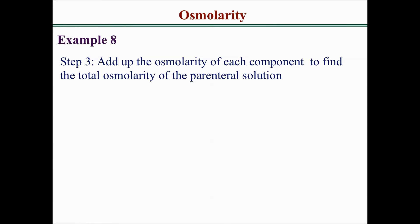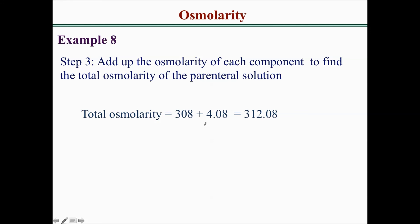Finally, the question asks us to calculate the total osmolarity of the parenteral solution. We add up the osmolarity of each component: 308 milliosmol per liter for the normal saline plus 4.08 milliosmol per liter for the calcium chloride dihydrate, giving a total osmolarity of 312.08 milliosmol per liter.